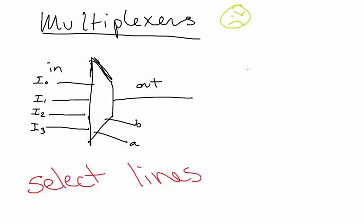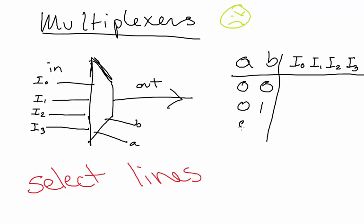The way it decides this - I'm pretty sure the hardware doesn't use a truth table, but we can use a truth table. So let's say: a, b, I0, I1, I2, I3. Zero zero, zero one, one zero...